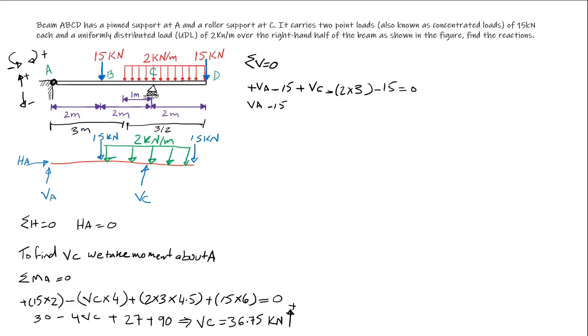VA minus 15 plus the value of VC which we found, 36.75, minus 2 times 3, 6, minus 15 equals 0. VA minus, we add all the negative values, that should give us 36 plus 36.75. We could see that VA equals 0.75 negative, it's acting downward.